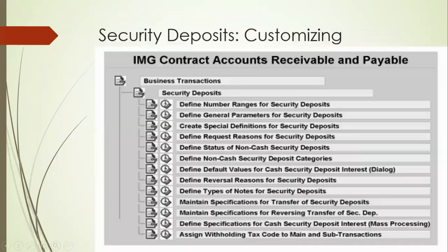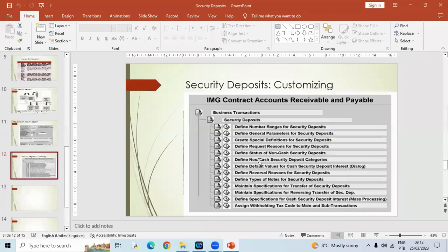So those things you need to configure here. Once everything is configured, you can go to the screen FPSEC1 and create a security deposit. So that much. Here we have actually finished the FICA — all these concepts. Apart from this concept, there are tables and events. I already showed you the tables and events once. So those things you need to learn — tables and events.